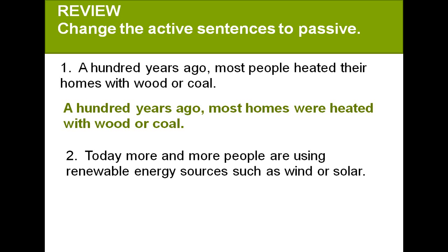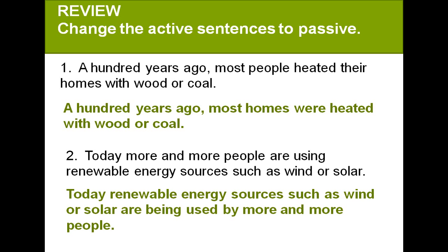Number 2 active: Today, more and more people are using renewable energy sources such as wind or solar. Passive: Today, renewable energy sources such as wind or solar are being used by more and more people. In the passive sentence, we use 'by more and more people' because we want to express the idea that the number of people is increasing.